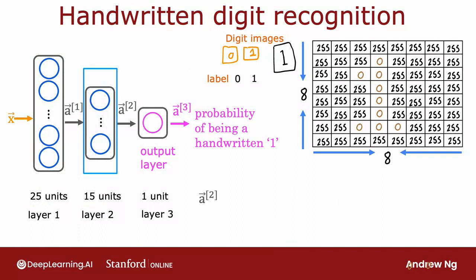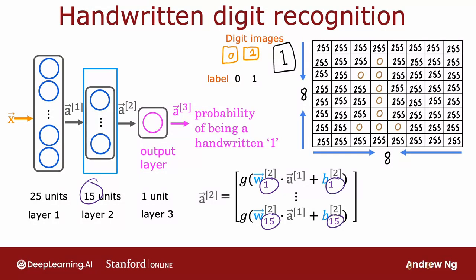Looking at the second hidden layer, it then carries out this computation where a2 is a function of a1 and is computed as the sigmoid activation function applied to w dot product a1 plus the corresponding value of b. Notice that layer 2 has 15 neurons, so 15 units, which is why the parameters here run from w1 through w15 and b1 through b15. Now we've computed a2.